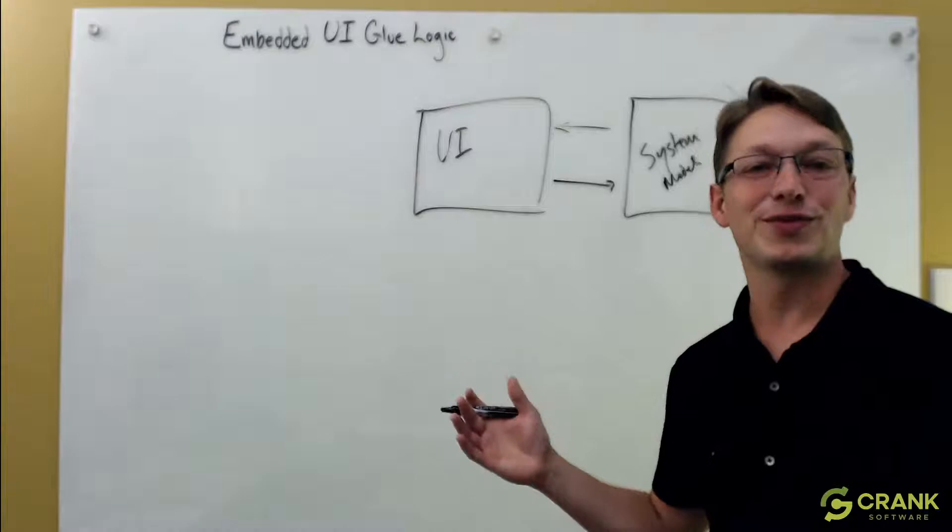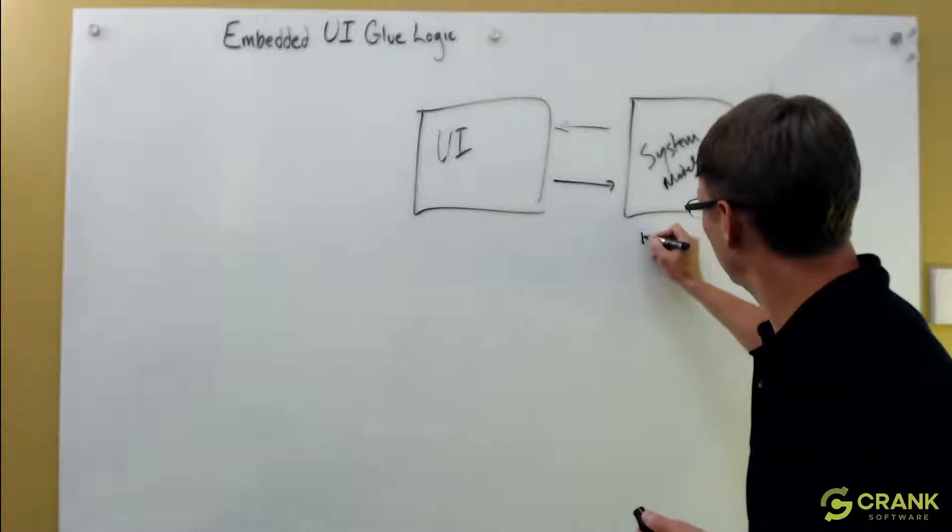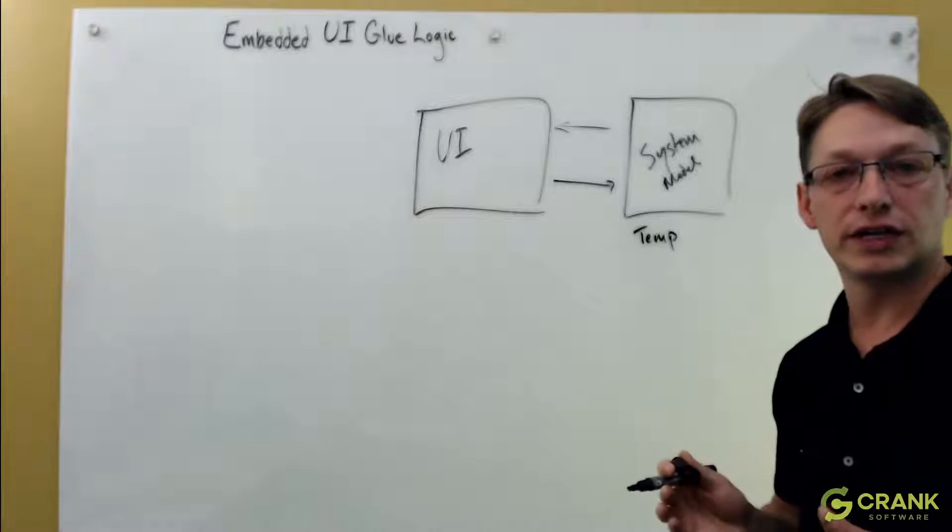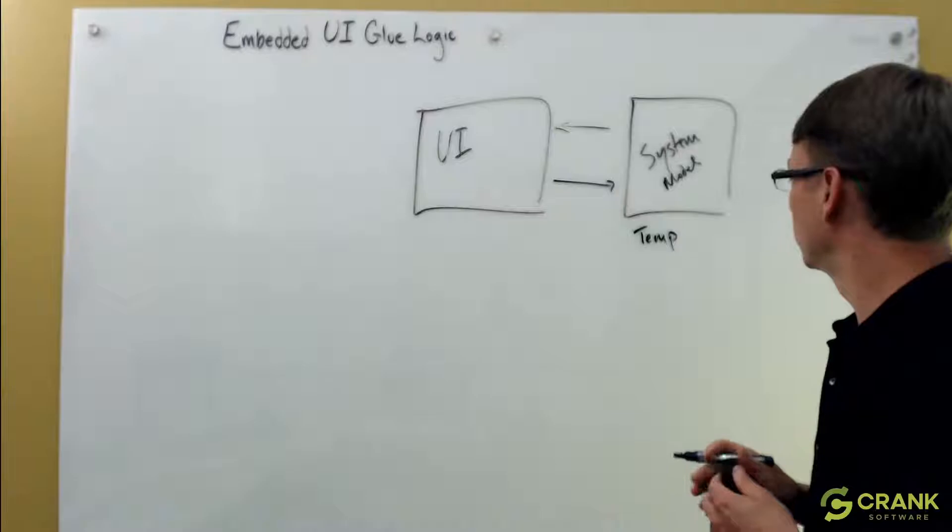This is important for embedded systems because we really like to keep that separation nice and clean. We're already working in constrained environments, so we want to have the freedom to optimize individual areas as we see fit. Let's talk about what this means in a more tangible sense. Let's imagine we're talking about a thermostat - coffee machines and thermostats are always our examples. If I have a system model, I might have temperature as part of the data I'm storing in my model - the current temperature, the set point temperature.